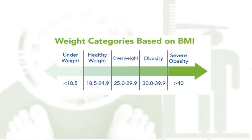A BMI of more than 25 indicates over-nourishment, which is further divided into three categories: 25 to 29.9 is considered overweight, 30 to 39.9 is obesity, and more than 40 is severe obesity.